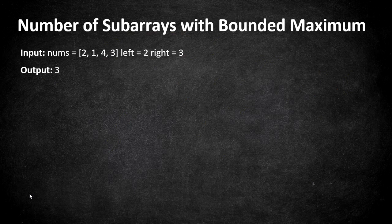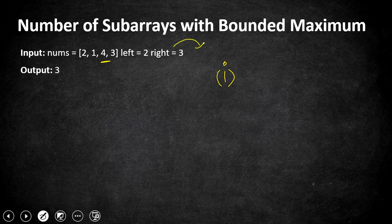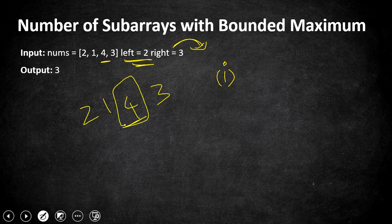To approach this optimally, we have two ideas. The first idea is: wherever a number whose value is greater than right appears, we cannot include that number in any of the subarrays. There is no problem if a number is less than left, because we can add one more element to it which is between the limit. So any number greater than right cannot be included. In our example 2, 1, 4, 3 — the element 4 is greater than right, so 4 cannot be included in any subarray. We can have subarrays only before 4 or after 4, and by using this technique we can stop our window before or after 4.